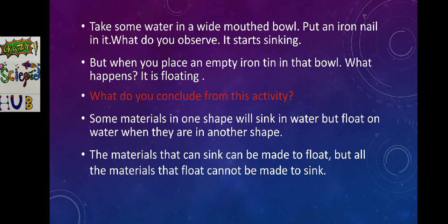Next, see the same activity is given for you here. Take some water in a wide mouthed bowl. Put an iron nail in it. What do you observe? It starts sinking. But when you place an empty iron tin in that bowl, what happens? It starts floating. Why? What do you conclude from this activity? Some materials in one shape will sink in water but float on water when they are in another shape. The materials that can sink can be made to float by changing their shape. But all the materials that float cannot be made to sink.